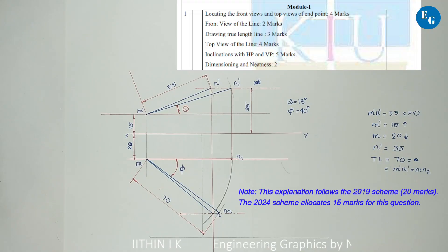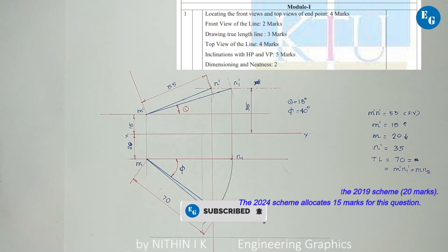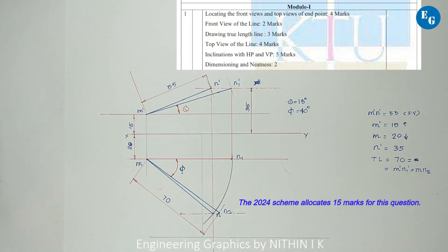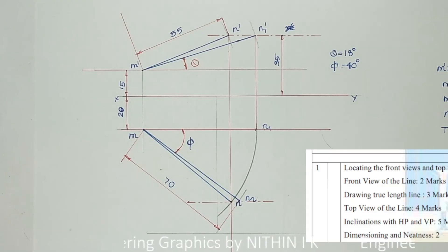Dimensioning rules: follow the alignment system and proper arrowhead notation. You can see the two marks for dimensioning and neatness if you follow the rules in your answer book. Thank you for watching. Please like, share, and subscribe. Doubts in comments.